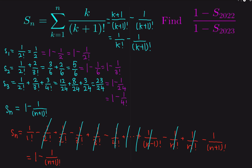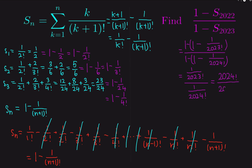Now all we have to do is plug our formula into the expression. 1 minus S of 2022 equals 1 over 2023 factorial, and 1 minus S of 2023 equals 1 over 2024 factorial. So the ratio is (1 over 2023 factorial) divided by (1 over 2024 factorial), which simplifies to 2024 factorial over 2023 factorial. Since 2024 factorial equals 2024 times 2023 factorial, this is just 2024.